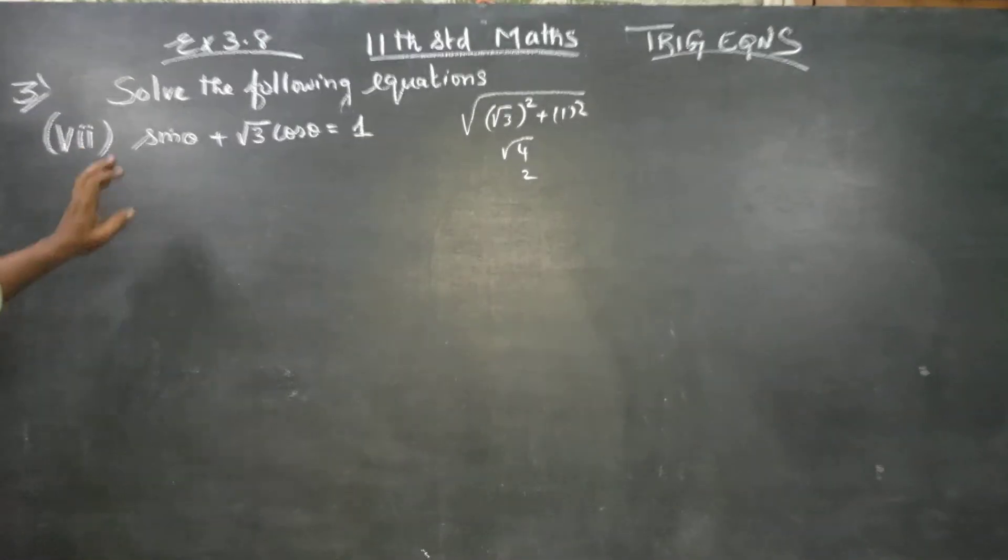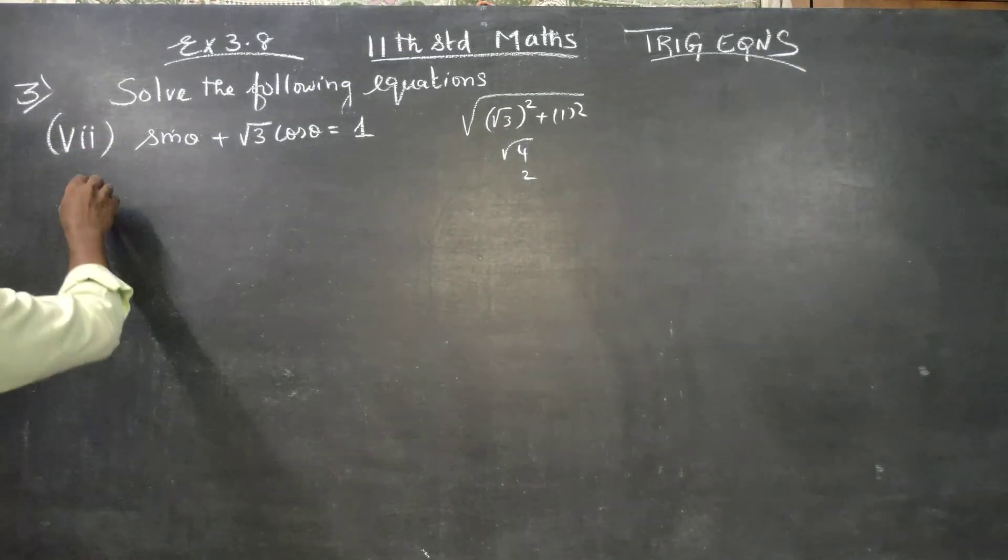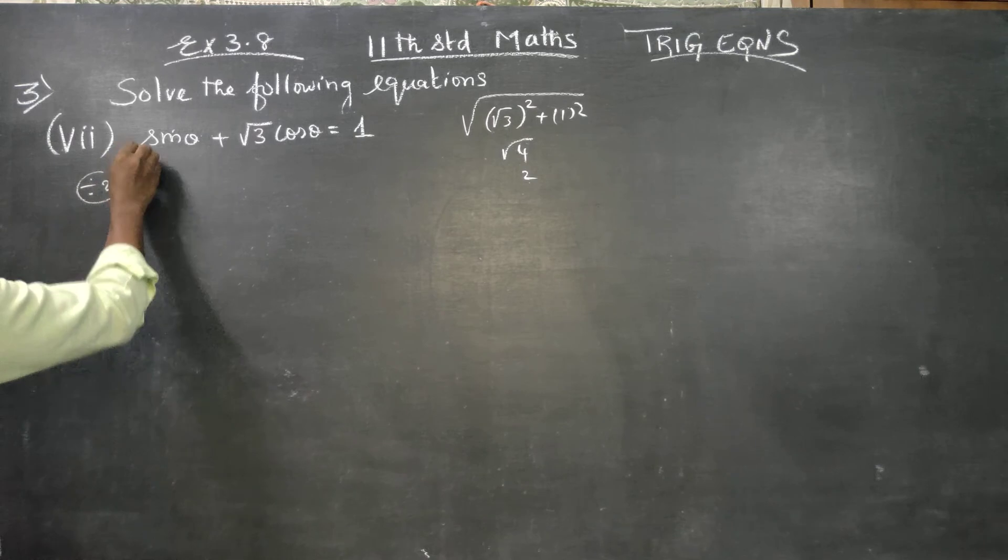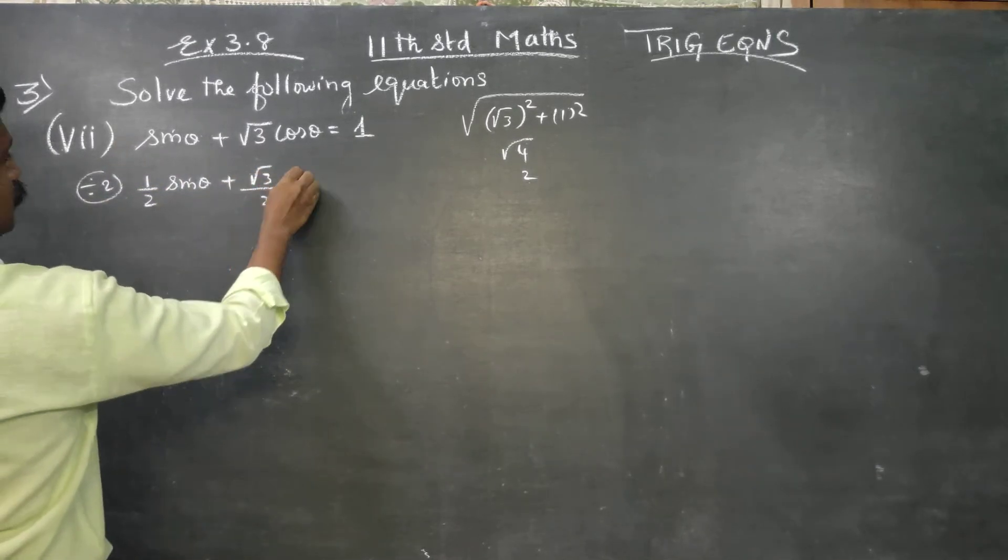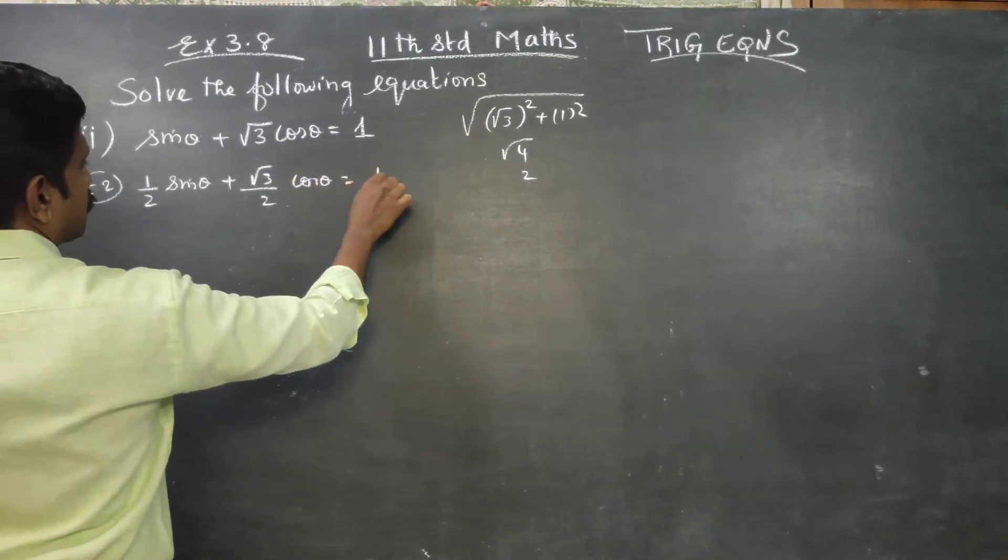You have to divide all the terms by 2. One-half sin theta plus root 3 over 2 cos theta equals one-half.